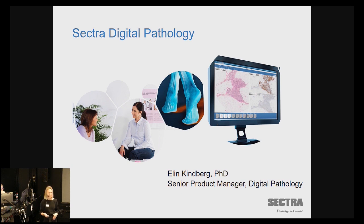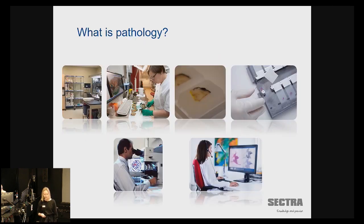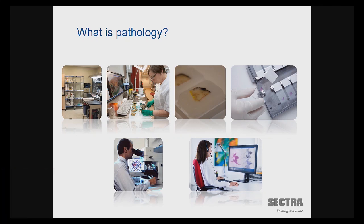We also have Dr. Anna Boden here who is going to present pathology from a pathologist's perspective as well. But first, what is pathology? Pathology is that you look visually at tissues or cells to determine if there is disease or not. While radiology can give an indication of disease, the pathologist is the gold standard for setting the diagnosis. Samples come into the pathology department from everywhere in the care chain — from primary care or surgery departments — and it's everything from a small birthmark or a cervix cancer screening to a full organ removal.